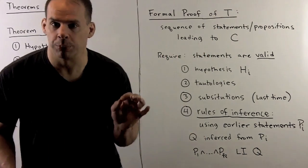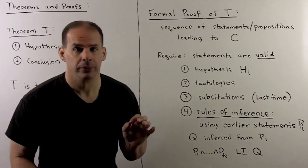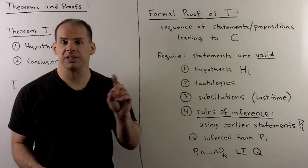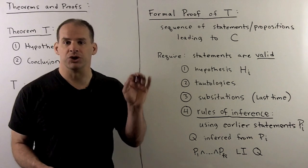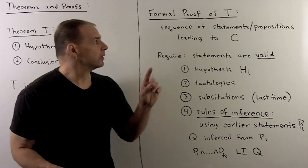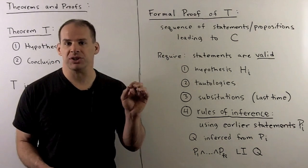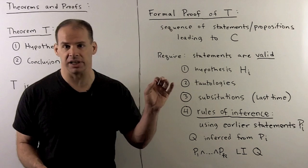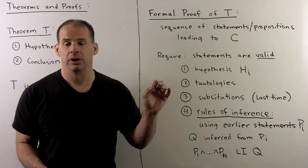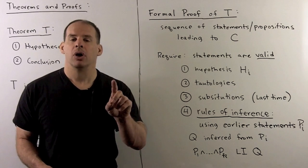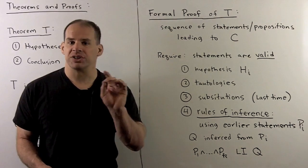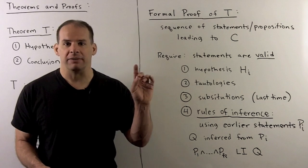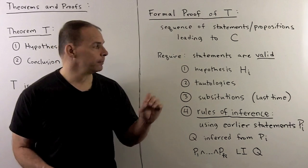What's a proof? A proof of our theorem T is just going to be a sequence of statements or propositions that lead to our conclusion C. In the sequence, all of our statements will need to be valid, and valid just means from the following list.